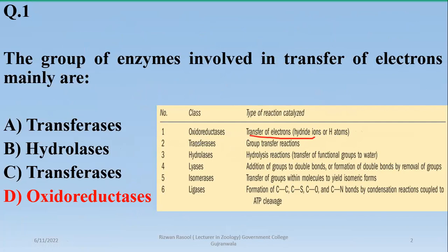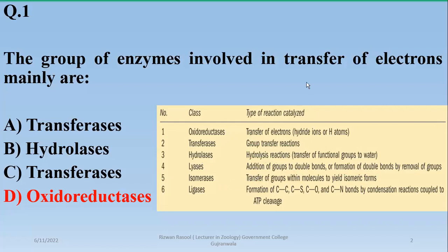Other enzyme classes are involved in group transfer reactions, hydrolysis, addition of groups to double bonds or formation of double bonds by removal of groups, isomerization, and ligases are involved in forming certain bonds, such as DNA ligases.